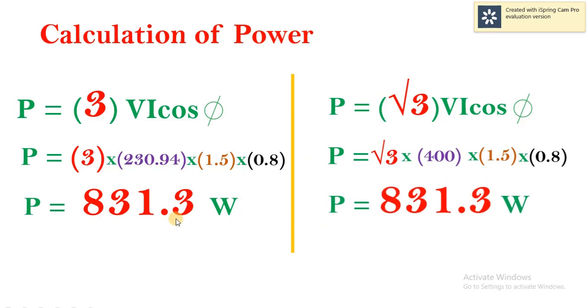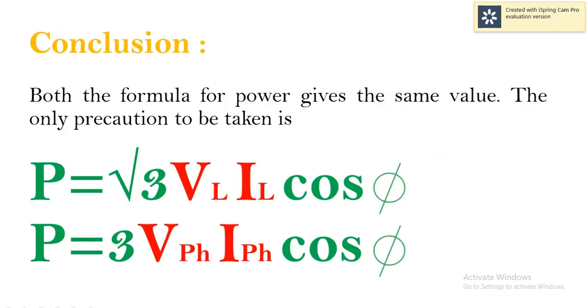That means we can use any of these equations to get the value of power. From this, we can conclude that both formulas give the same value. The only precaution to be taken is when you are using the formula which contains root 3, we have to use all the line values. Whereas, while using the equation which contains 3, we have to use all the phase values.